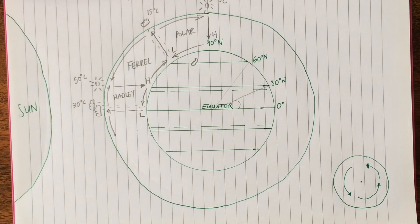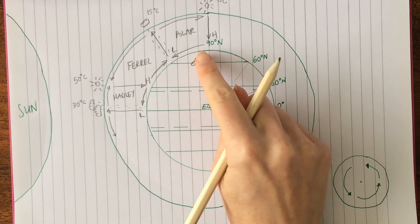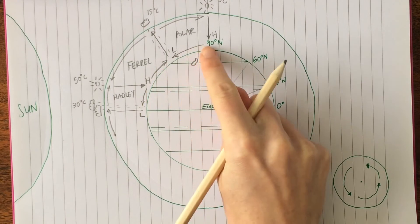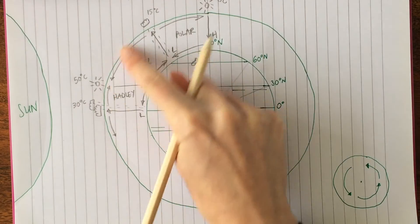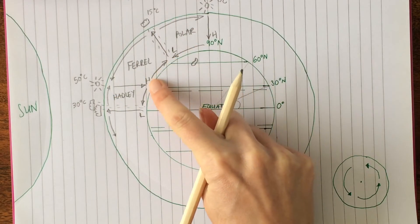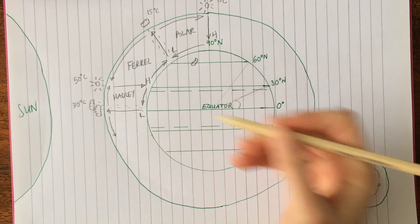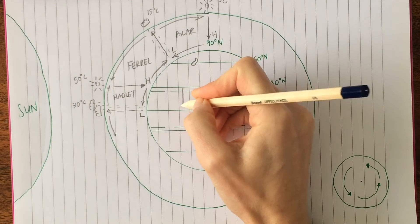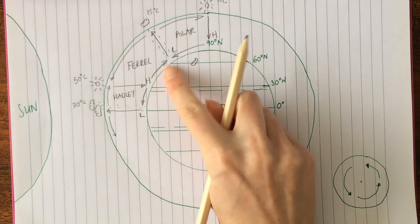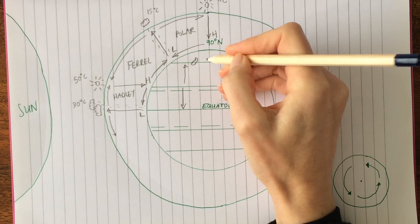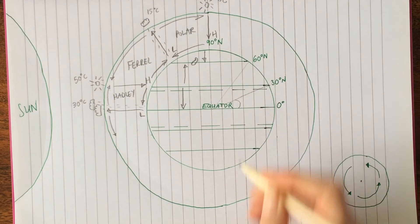That is the atmospheric circulatory system. The other thing we need to talk about is surface winds. Surface winds are shown by the arrows on the diagram — these are the winds on the surface rather than in the upper atmosphere. We can see the arrows going in certain directions.